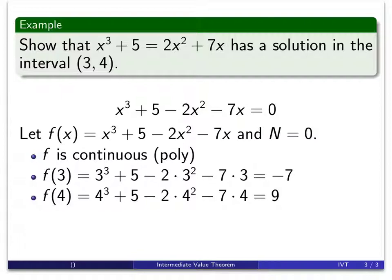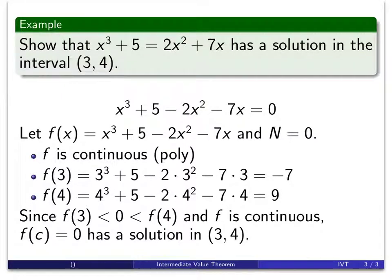And so now we just do our little flourish at the end, where we state the Intermediate Value Theorem and how it applies to our particular situation. f(3) is less than 0. Yes, -7 is less than 0. f(4) is greater than 0, 9 is greater than 0. Our function is continuous. So f(c) = 0 has a solution. And if this has a solution in the interval from 3 to 4, then this equation will also have a solution in that interval.